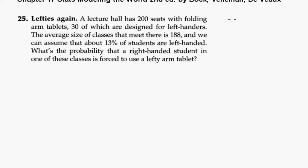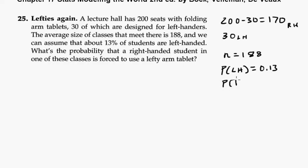So 200 minus 30 is 170 for right-handers, and 30 for left-handers. The average size of classes that meet is 188, so that's our sample size. It's going to be 188 students, and we can assume about 13%, so the probability of left-handed is 0.13, and the probability of a right-hander is 0.87.